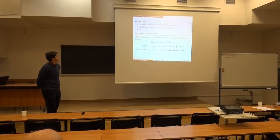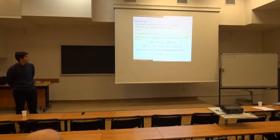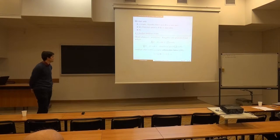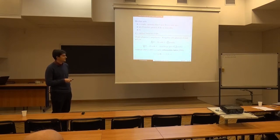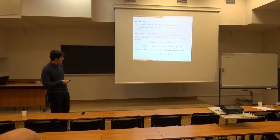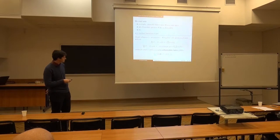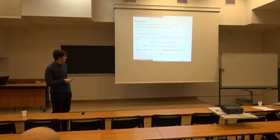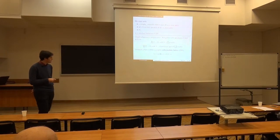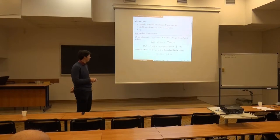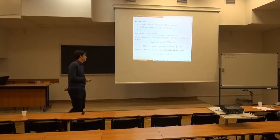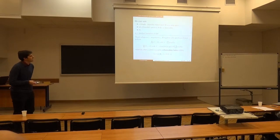We know that projections, together with operations of meet and join, constitute what is called a complete orthomodular lattice. We have L for short — the space of projections — with meet, join, the projection on the empty subspace, projection on the full Hilbert space, and the orthocomplement, which is just one minus the projection on the orthogonal subspace of the given subspace.